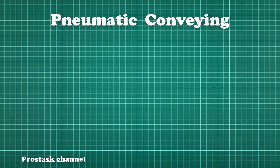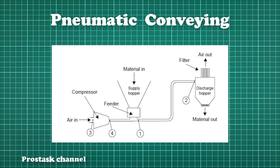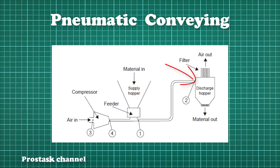The pneumatic system requirements are a compressed gas, usually air, a feed device, a conveying pipeline, and a receiver to disengage the conveyed material from the carrier gas.